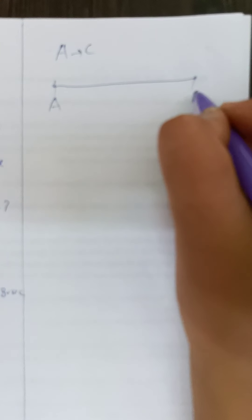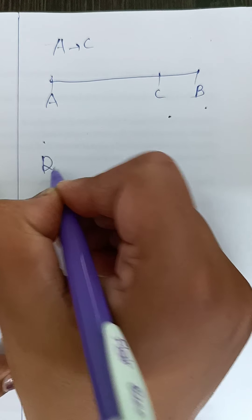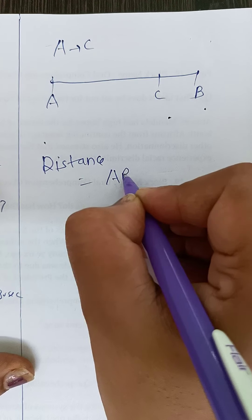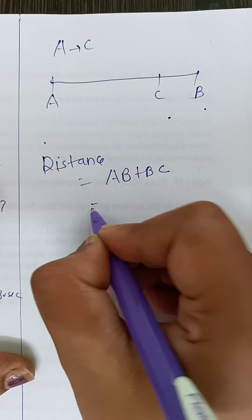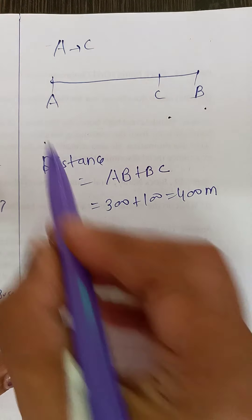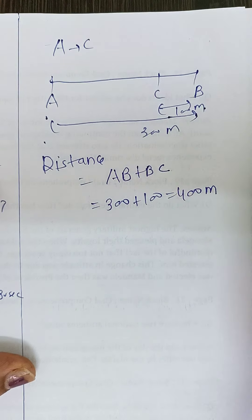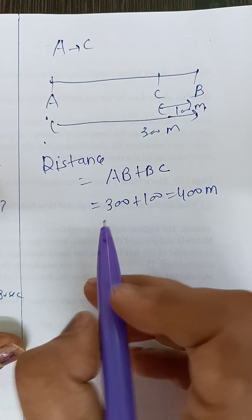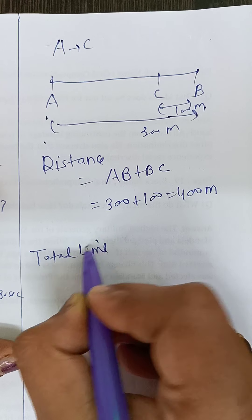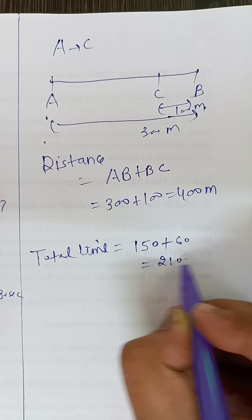Now after this we have to see from A to C. If we see again, A, B and C. A to C via B, first how much distance is covered? Distance will be A-B plus B-C. AB is 300 and BC is 100, so distance is 400 meter. AB is given in statement as 300, and B to C is 100. So distance is 400 meter. Now see, for this what is total time? Total time for A to B is 150 seconds and B to C is 60 seconds, so this is 210 seconds.